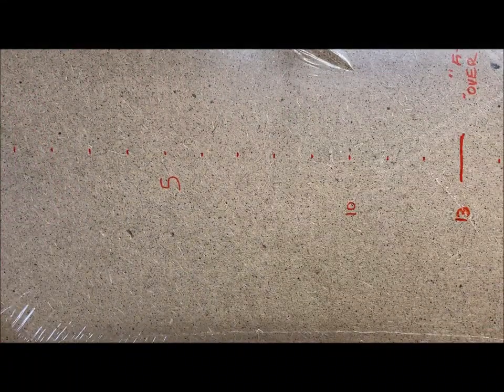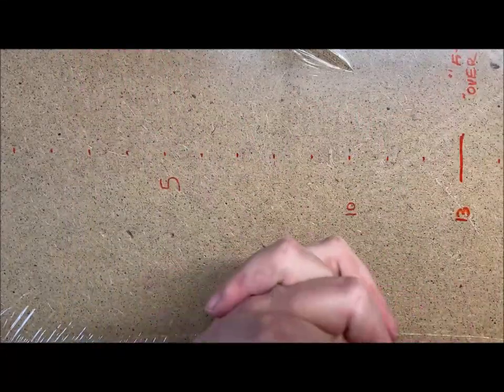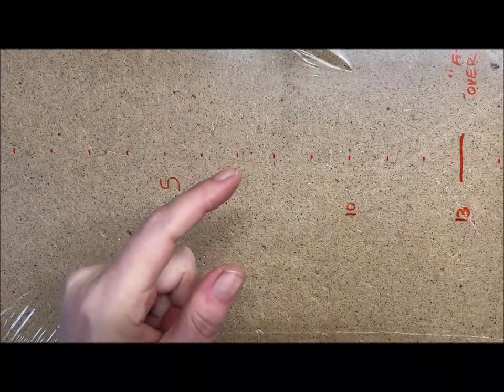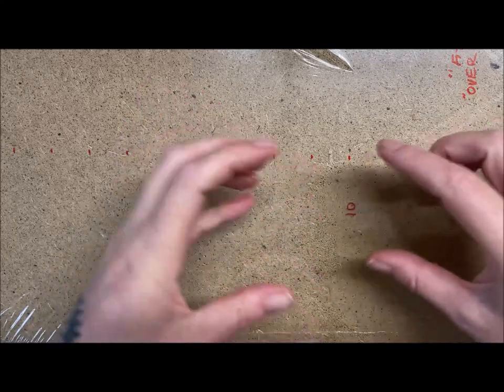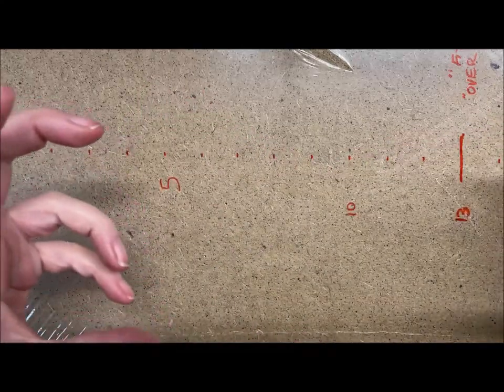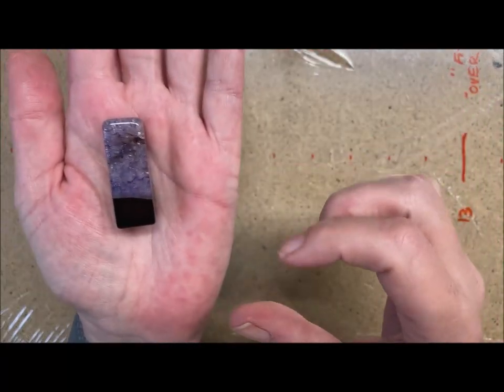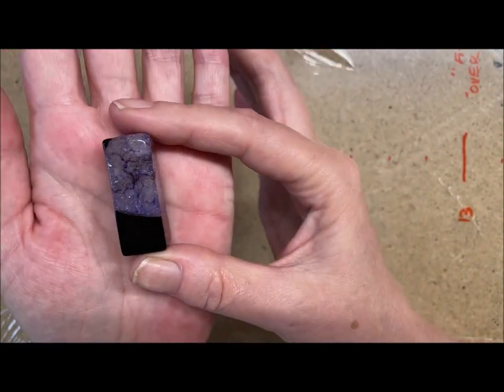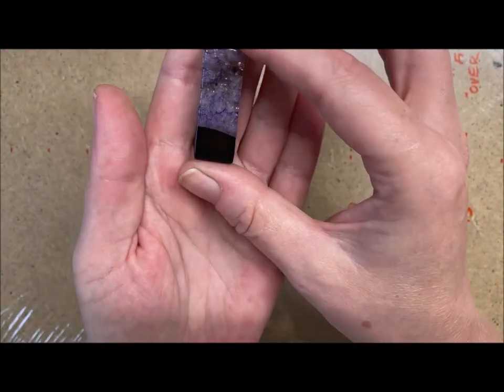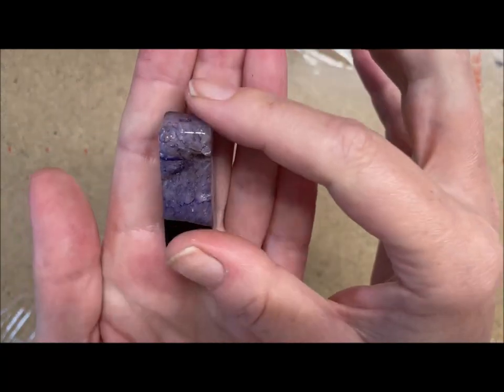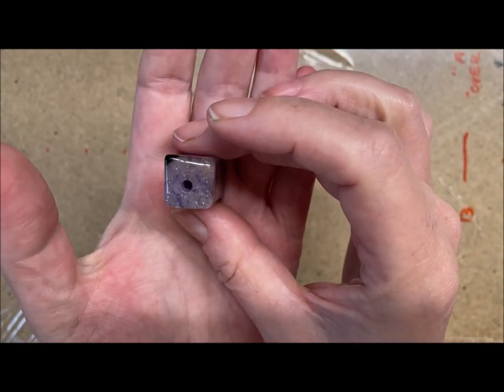So today I'm going to be making a beaded lariat style pendant. This is my feature bead, which is an amethyst piece. It's very very dark, almost black on the bottom. Got a lovely quite a big hole in it. Nice piece. So that's my feature bead.